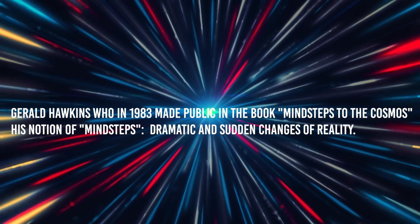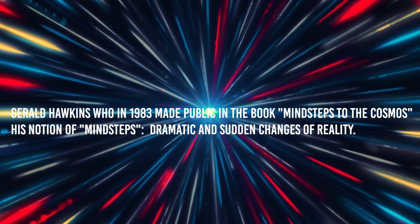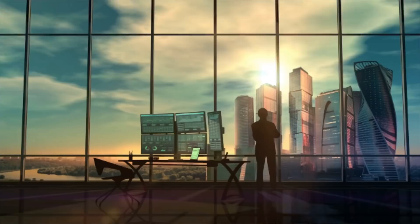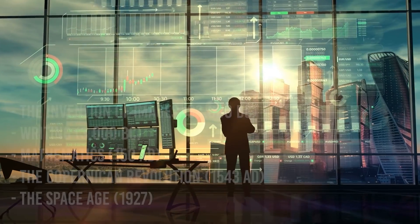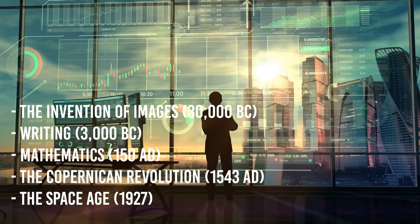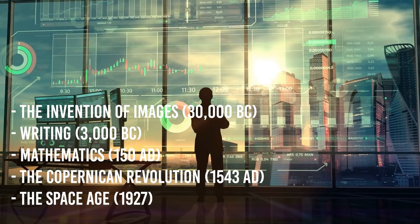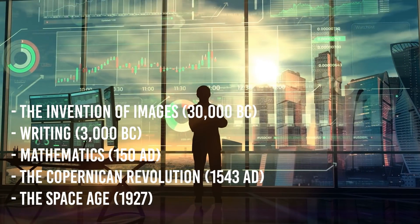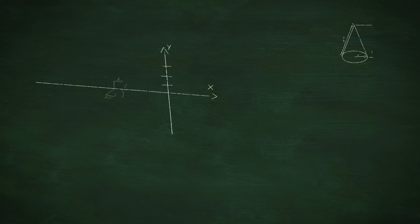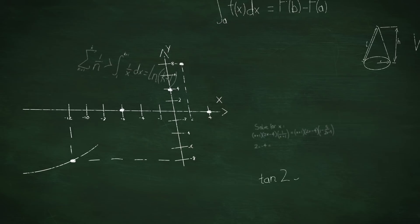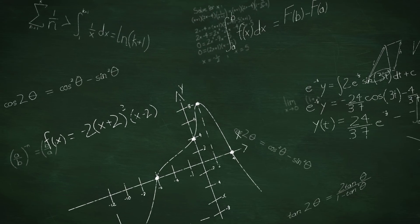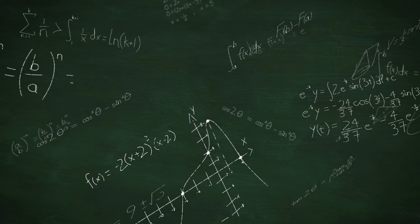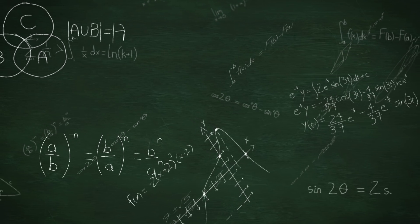Something very similar had already been done by English astronomer Gerald Hawkins, who in 1983 made public his notion of mind steps—dramatic and sudden changes of reality. Hawkins identified five main mind steps in the history of mankind: the invention of images, writing, mathematics, the Copernican revolution, and the space age in 1927. Hawkins points out that the waiting period between changes gets shorter and shorter. The date of the next mind step, according to Hawkins, is 2021, followed in rapid acceleration by 2045, 2051, and lastly 2053.